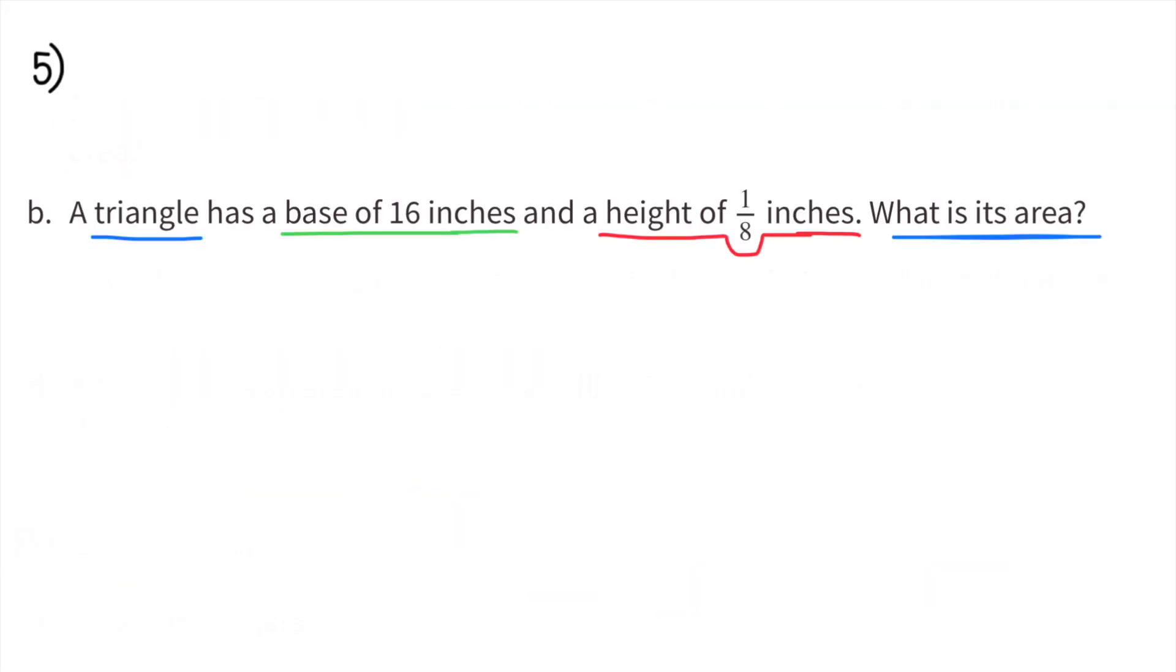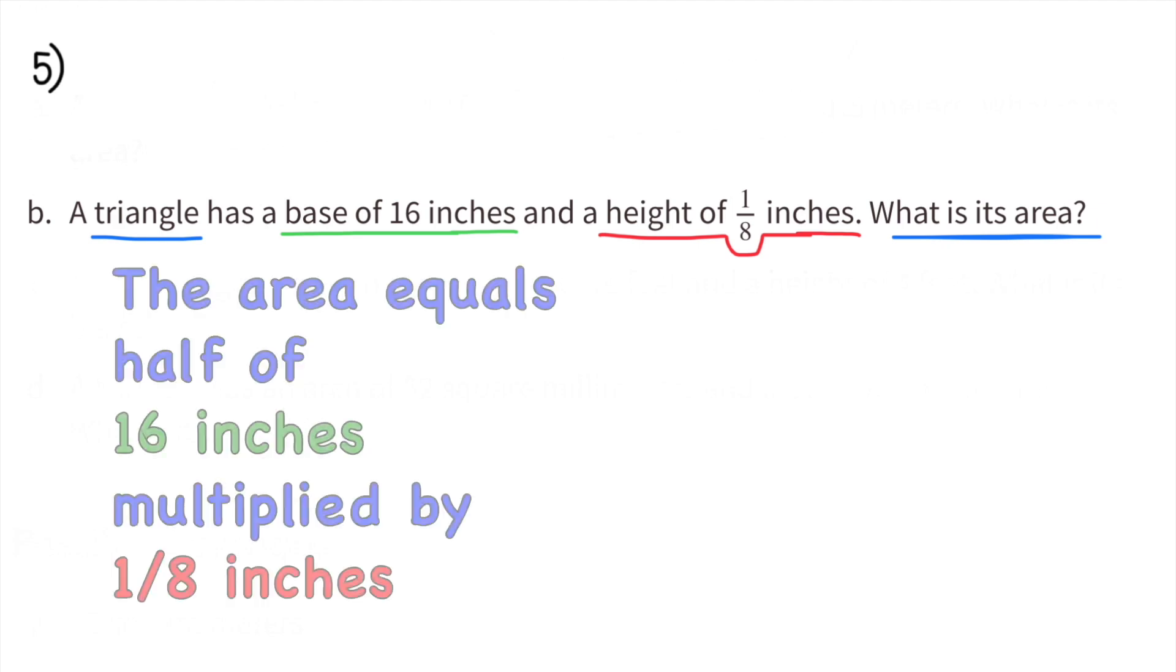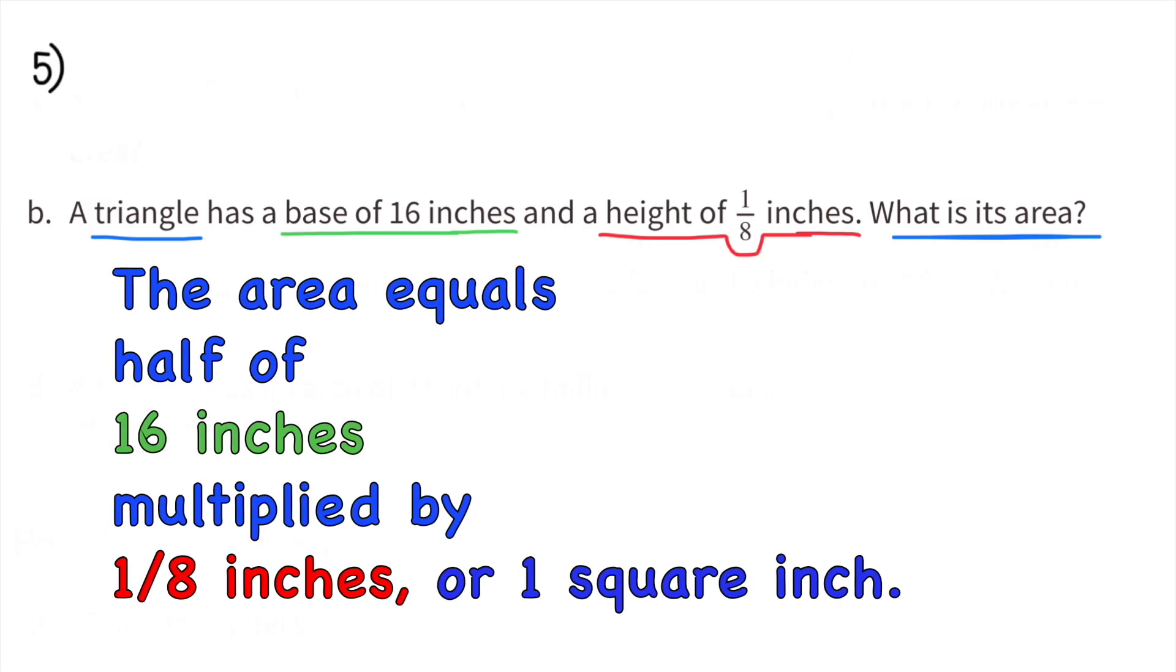Part B: A triangle has a base of 16 inches and a height of 1/8 of an inch. What is its area? The area equals half of 16 inches multiplied by 1/8 of an inch, or 1 square inch. The area of this triangle is 1 square inch.